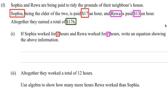So in the first part of the question, it's actually asking us to write an equation showing the above information. What we have is 17S — because $17 for Sophia's number of hours she worked — plus 13R, that's $13 an hour times R for the number of hours Riva worked, and that equals 176. This is the first equation in the set of simultaneous equations.